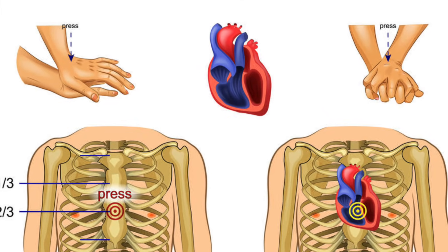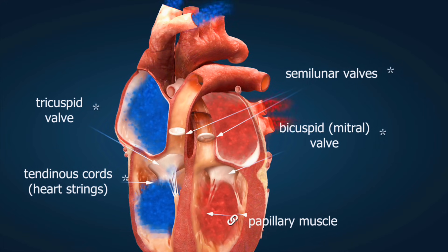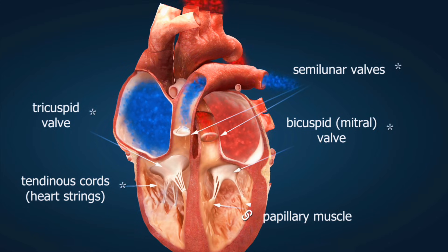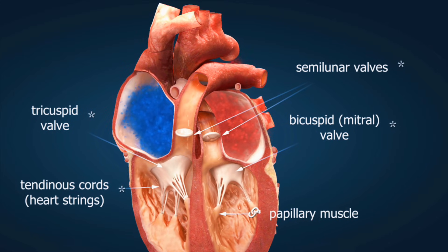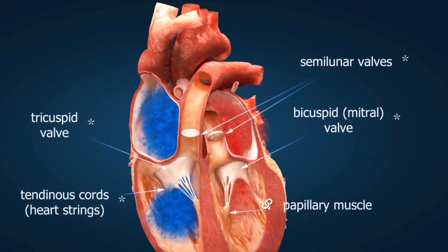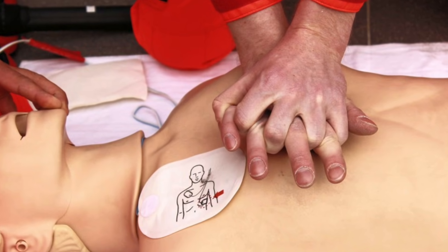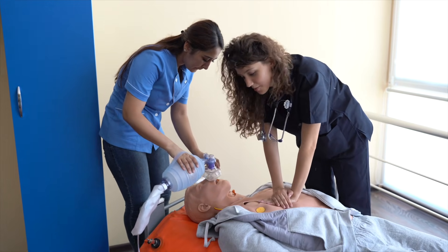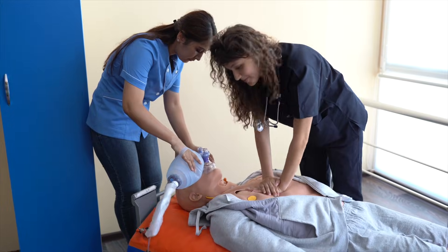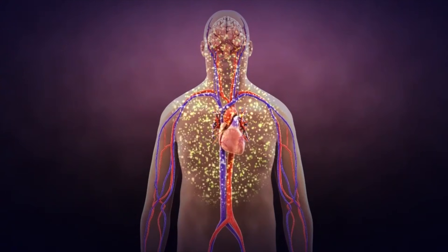Locate the compression point — chest center aligned between both nipples. Your bottom hand's heel goes here, top hand stacked above, fingers interlaced. Lock your elbows straight and align your shoulders directly over your hand position. Deliver compressions at 100 to 120 per minute — think the 'Stayin' Alive' beat. Push down at least two inches, allowing complete chest recoil between each compression.